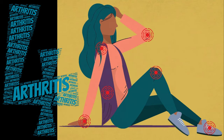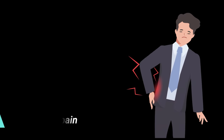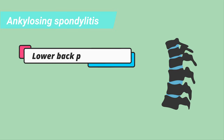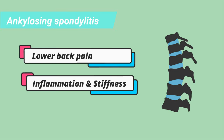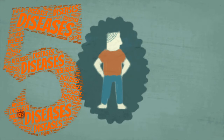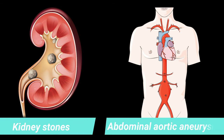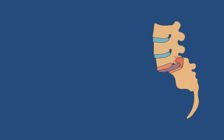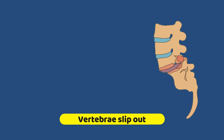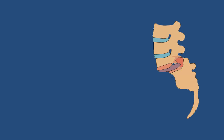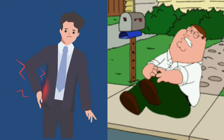Fourth is arthritis. Osteoarthritis is the most common type of arthritis to cause lower back pain. Ankylosing spondylitis causes lower back pain, inflammation and stiffness in the spine. Fifth is diseases. Spine tumors, infections and several types of cancer can cause back pain. Other conditions can cause back pain too, including kidney stones and abdominal aortic aneurysm. Sixth is spondylolisthesis. This condition causes the vertebrae in the spine to slip out of place, leading to lower back pain and often leg pain as well.